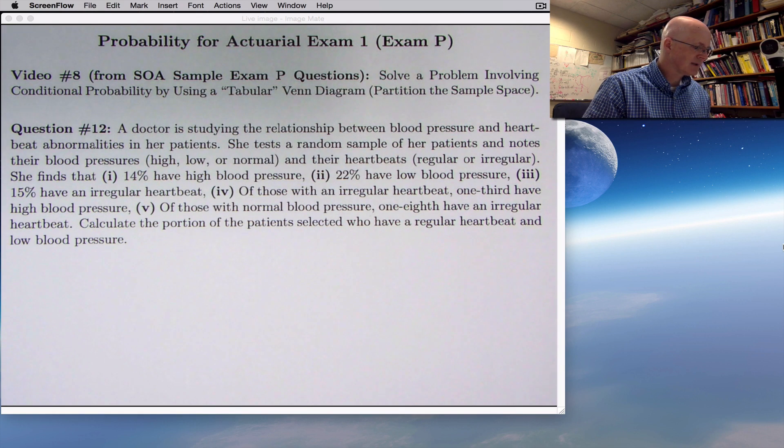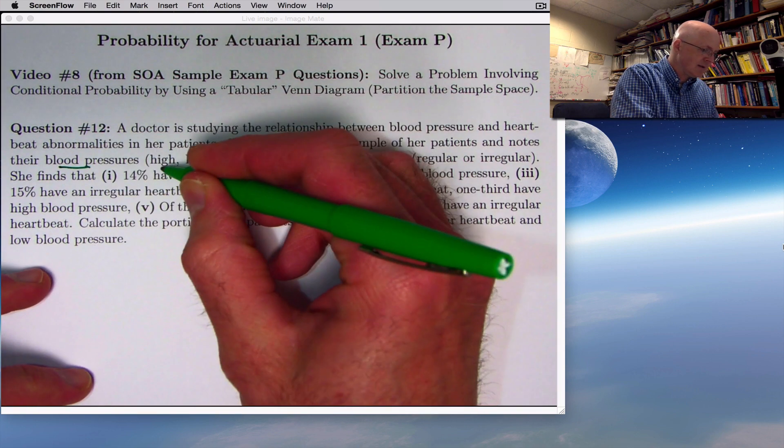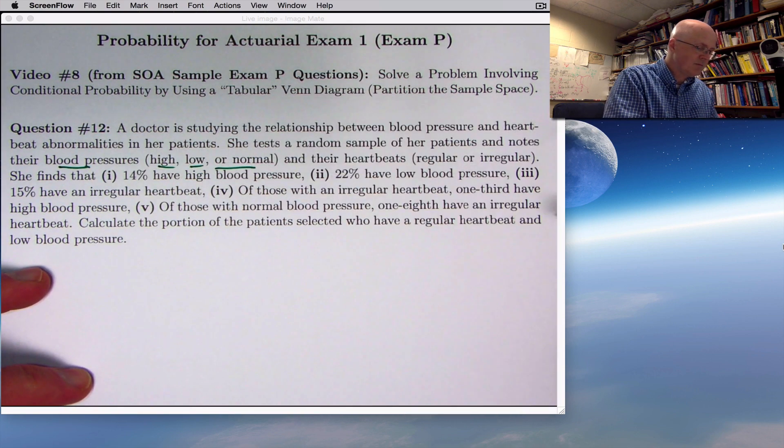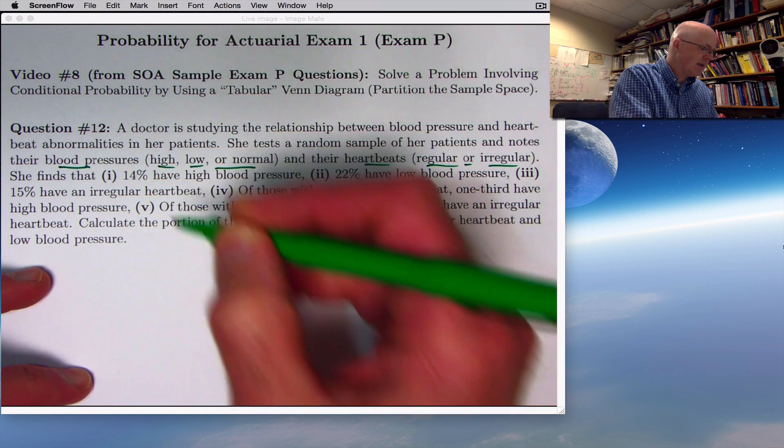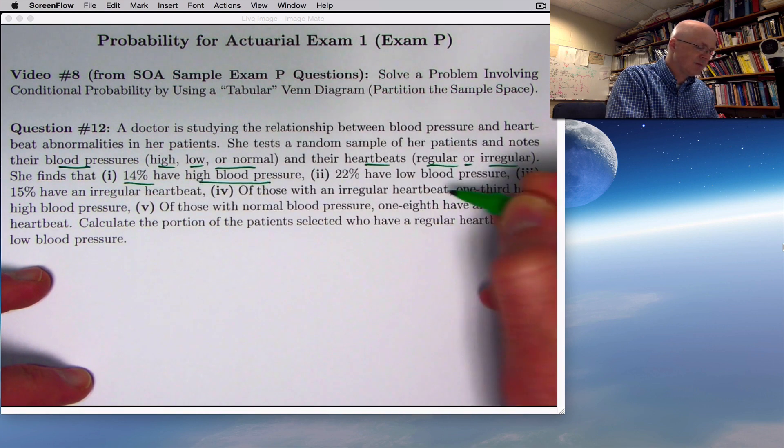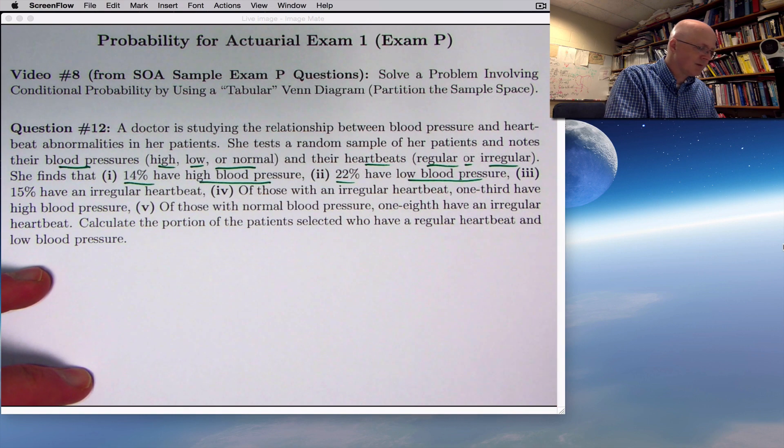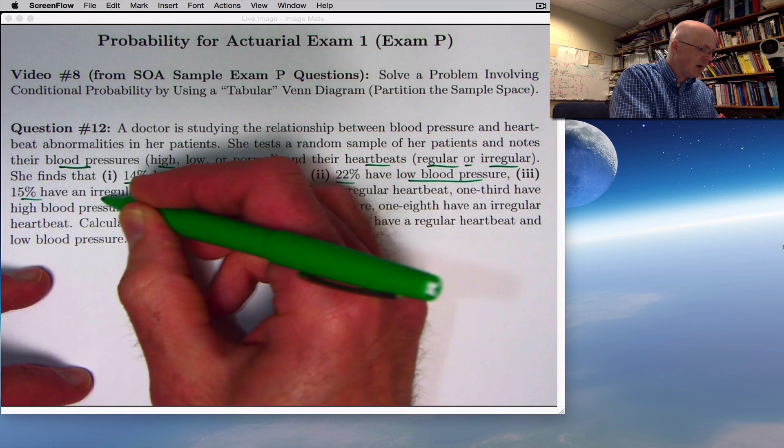The problem says a doctor is studying the relationship between blood pressure and heartbeat abnormalities in her patients. She tests a random sample of her patients and notes their blood pressures as either high, low, or normal, and their heartbeats as either regular or irregular. She finds that 14% have high blood pressure, 22% have low blood pressure, 15% have an irregular heartbeat.